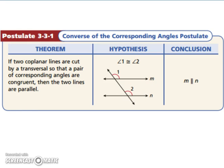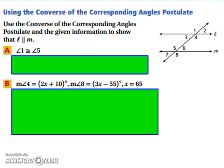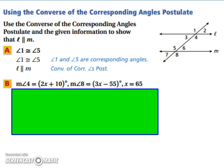Let's look at an example. We're going to use the converse of the corresponding angles postulate to show that line L is parallel to line M. If we look, angle 1 and angle 5 are corresponding angles, and since they're congruent, the two lines have to be parallel.